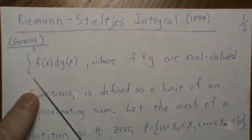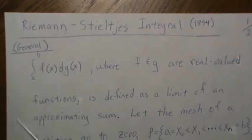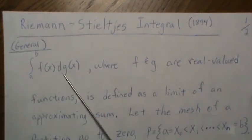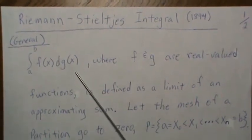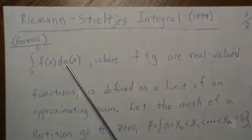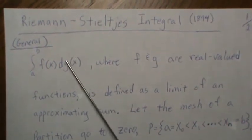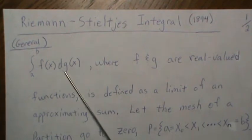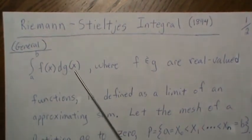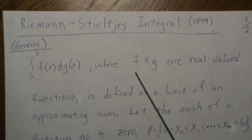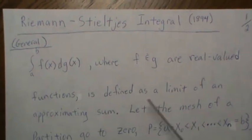This is the general notation: the integral from a to b of f(x) dg(x). Now the Riemann integral, instead of g(x), would just be x, so f(x) dx, but we're doing it with respect to g(x).